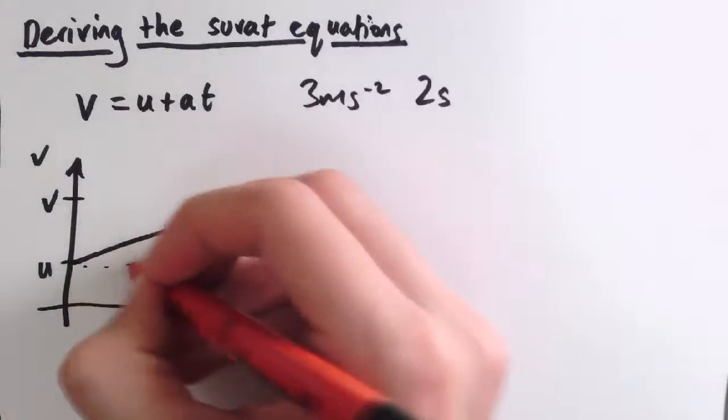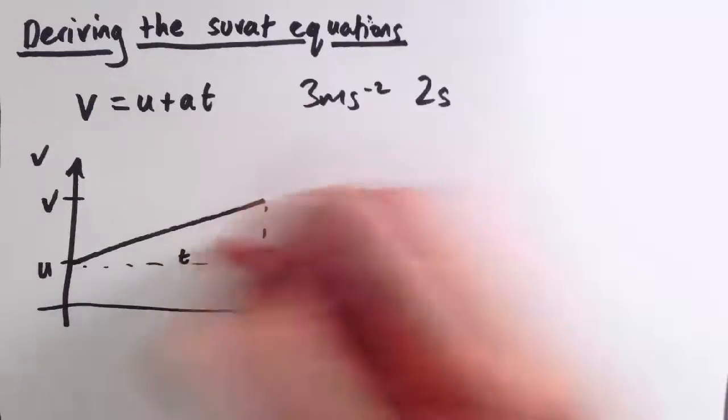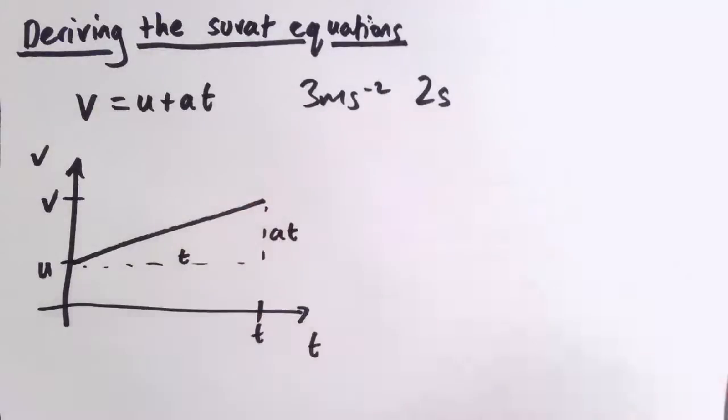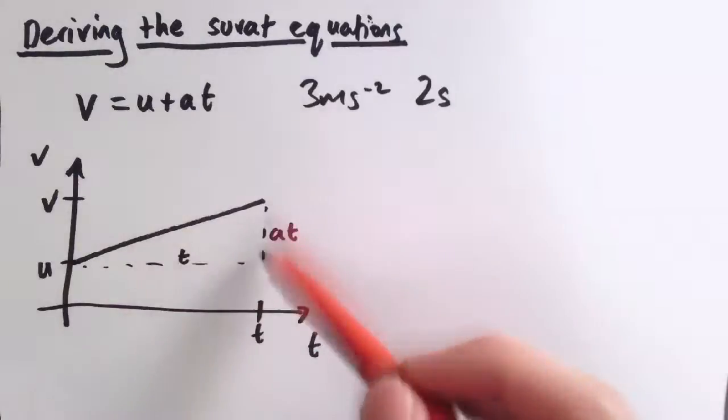So if we think about this triangle here, we've got a certain time t, this is at because a is the gradient, and you can see that v is u plus at.